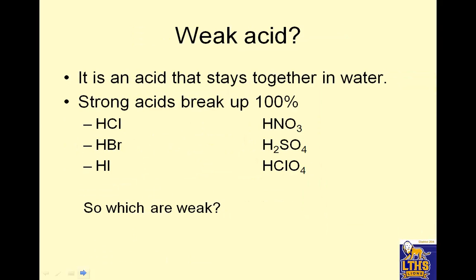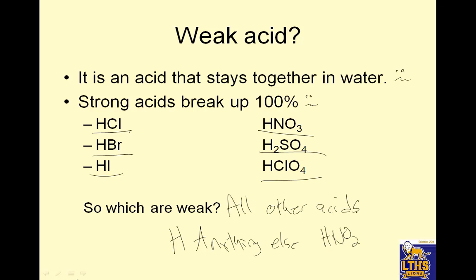A weak acid, it's an acid that stays together in water. You don't really need to know that. Strong acids break up 100%. You don't really need to know that. But you do need to know what your strong acids are. Your strong acids are HCl, hydrochloric. HBr, hydrobromic. HI, hydroiodic. Nitric acid, sulfuric acid, and perchloric acid. So which are weak? All other acids. And how do I know if it's an acid? Hello, I'm an acid. So H, anything else? So is HNO2 a weak acid? Yes. Is HF a weak acid? Yes, because it's not any of these. Is H, your mama, an acid? Your mama, a weak acid. H, your mama, a weak acid. Yes, it is.